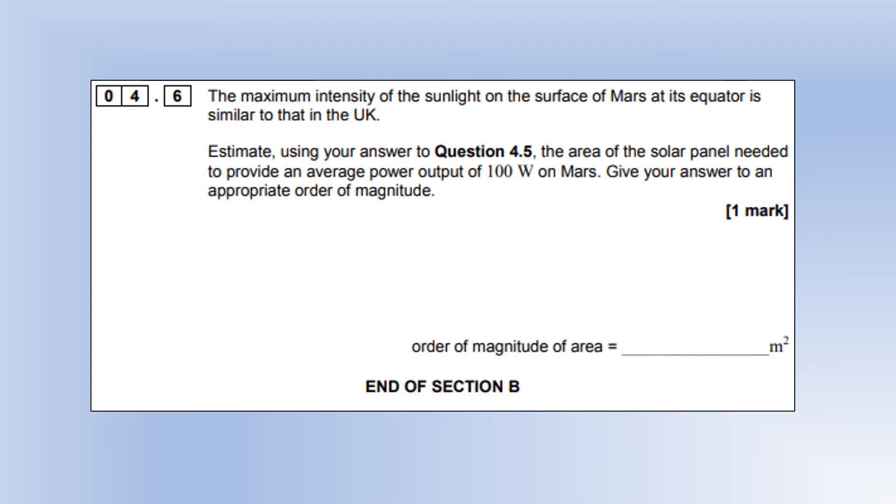The maximum intensity of sunlight on the surface of Mars at its equator is similar to that on Earth. Using your previous answer, estimate the area of solar panel needed to provide 100 watts on Mars. If the intensity is the same and intensity is power per unit area, we need a similar area to what we have on Earth. A typical roof with solar panels might be about 3 by 5 meters, so about 15 square meters. To the right order of magnitude, 10 square meters.